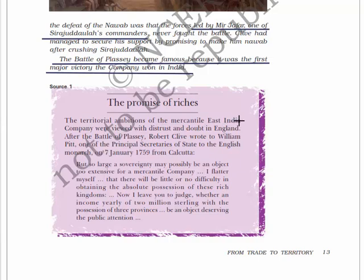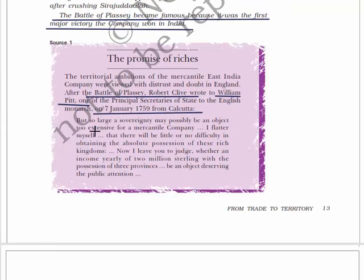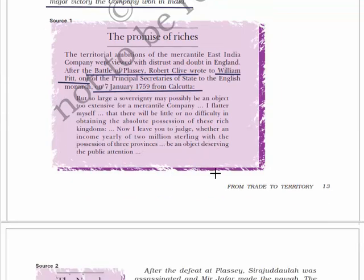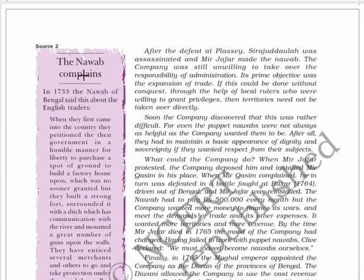The territorial ambitions of the mercantile East India Company were viewed with distress and doubt in England. After the Battle of Plassey, Robert Clive wrote to William Pitt, one of the principal secretaries of state, on the 7th of January 1759 from Calcutta: 'So large a sovereignty may possibly be an object too extensive for a mercantile company. I flatter myself that there will be little difficulty in obtaining absolute possession of these rich kingdoms - an income yearly of two million sterling with the possession of three provinces.'